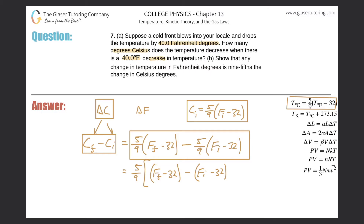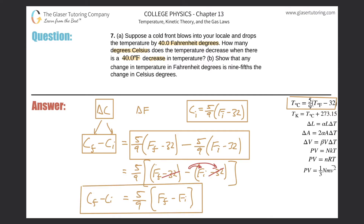Inside the bracket, if we distribute the negative to both terms, the minus 32 becomes positive 32. Now within the bracket the 32 values cancel because they have opposite signs. This leaves five-ninths multiplied by the final Fahrenheit temperature minus the initial Fahrenheit temperature, which equals the final Celsius minus the initial Celsius. In other words, the change in Celsius temperature equals five-ninths times the change in Fahrenheit temperature.